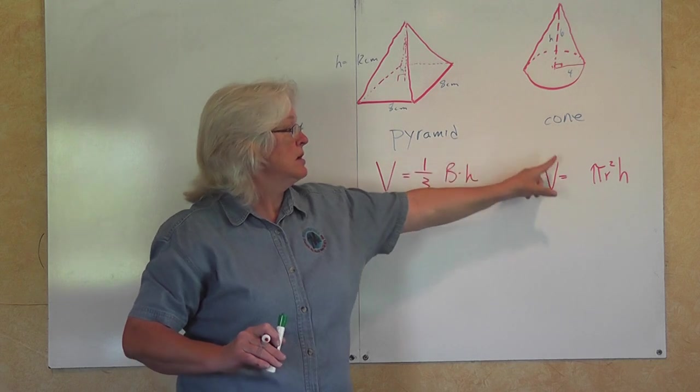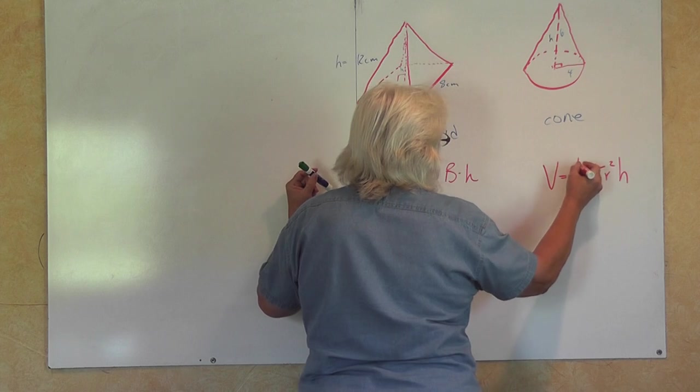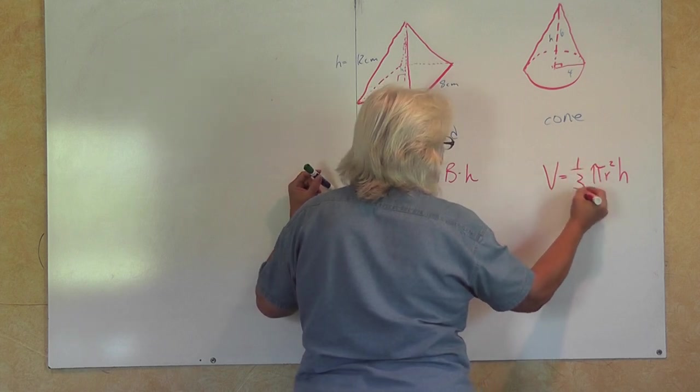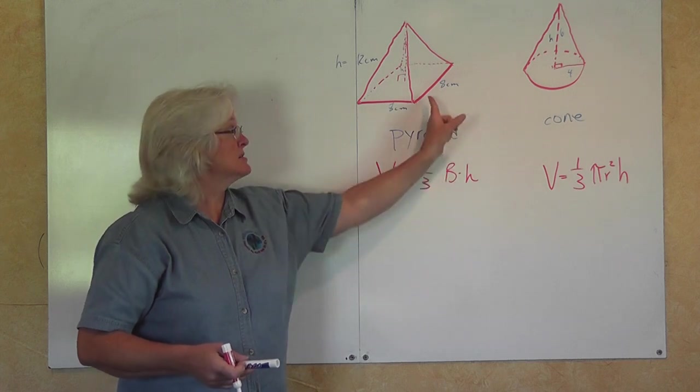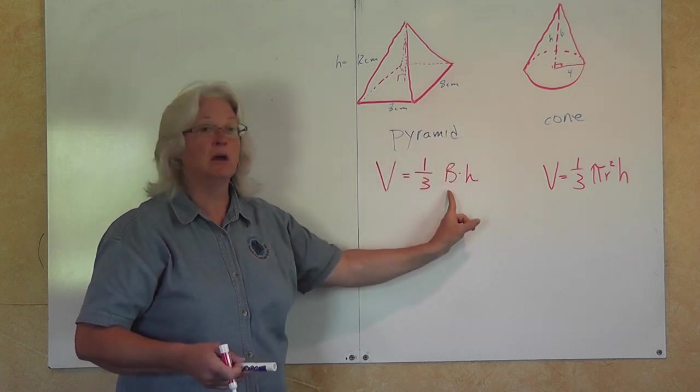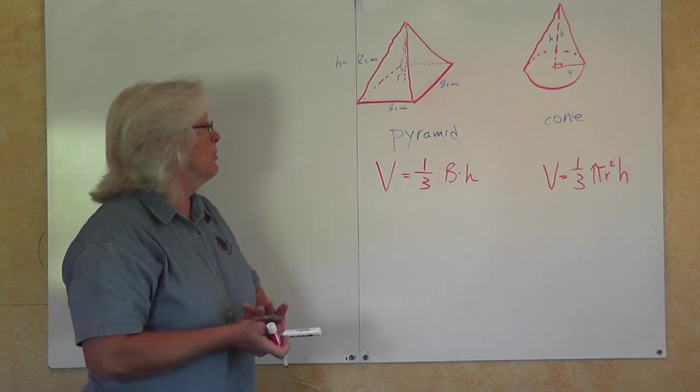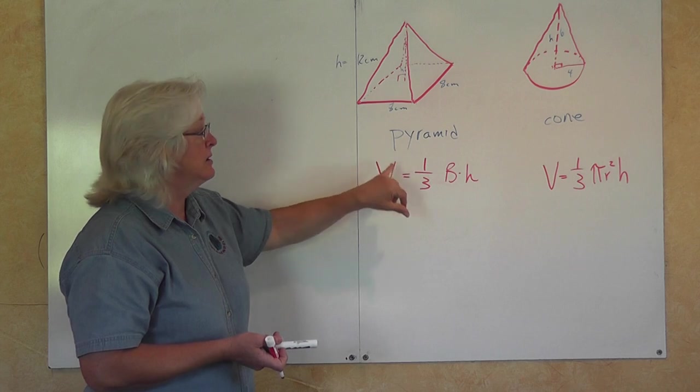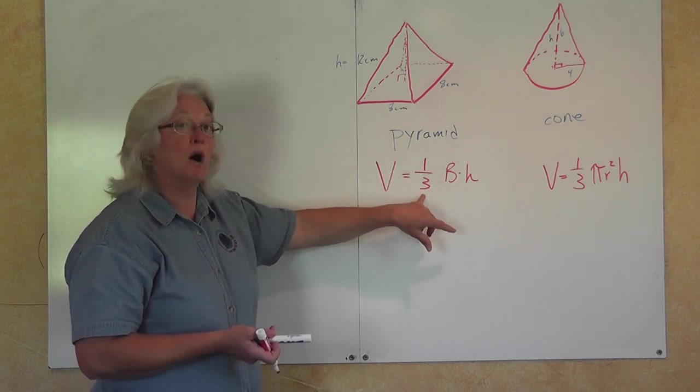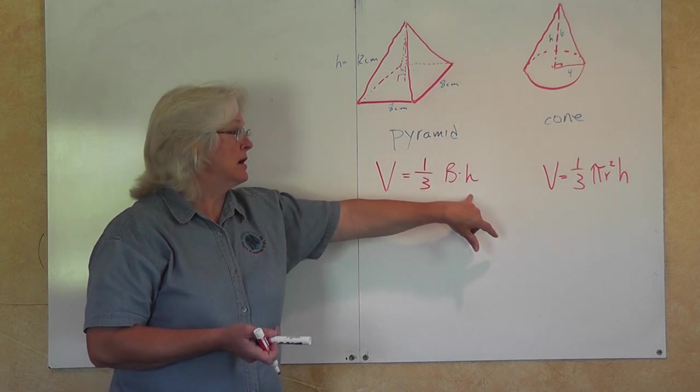For the cone, it's one-third the volume of a cylinder. Regardless of what the base is—it could be a square base, it could be a rectangular base, it could be a quadrilateral—the way that you find the volume of a pyramid is that's one-third the product of the base times the height.